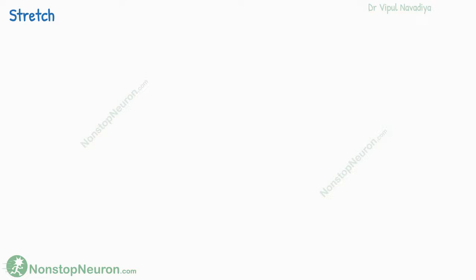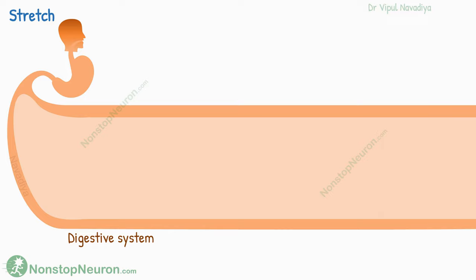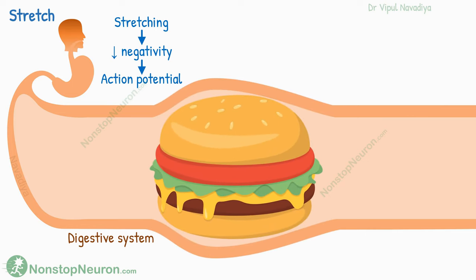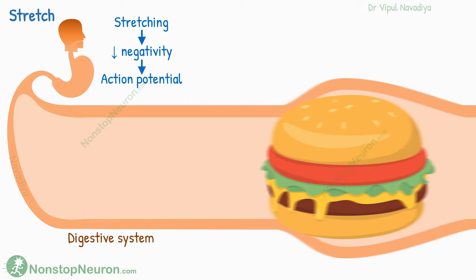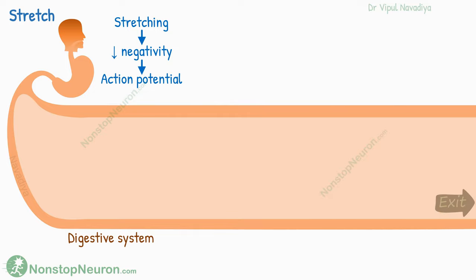Now let's talk about the role of stretch. It's seen in unitary smooth muscles, which are found in the walls of organs like the digestive system. Stretching of such muscles leads to a decrease in the overall negativity of the cell membrane. This change triggers spontaneous action potentials, ultimately resulting in muscle contraction. This mechanism is beneficial when the gut is overfilled, as the stretching of the smooth muscle triggers automatic contraction, which helps to propel the contents forward.